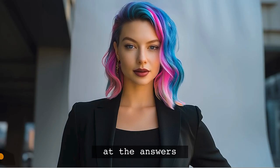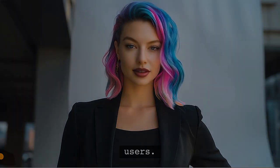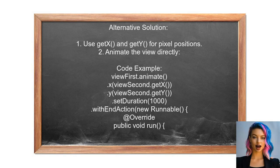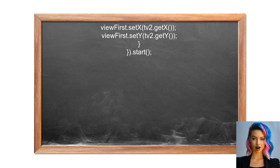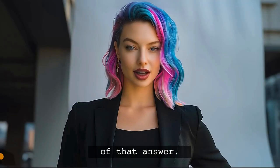Now let's look at the answers provided by other users. An alternative approach suggested by another user involves using the getX and getY methods to define the view's position in pixels. Instead of using TranslateAnimation, they recommend animating the view directly to the target coordinates.